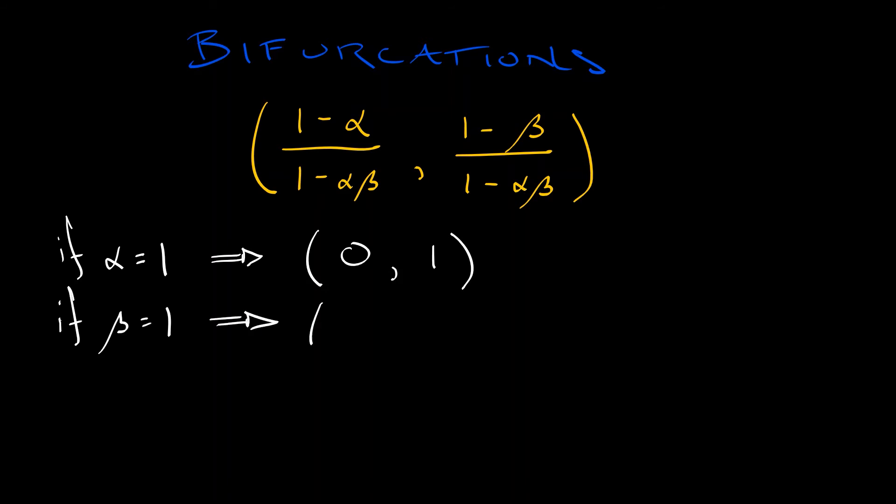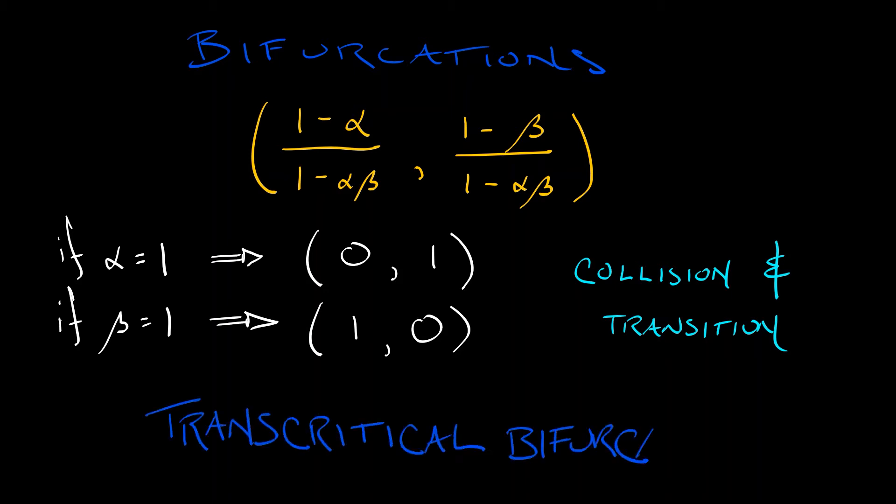Likewise, if beta equals 1, then this fourth equilibrium simplifies to (1,0). So what's really happening at these two different parameter values, we have a collision between the fourth equilibrium and either the second or the third, and a transition there, a switching of types. And of course, this indicates a transcritical bifurcation happening here.